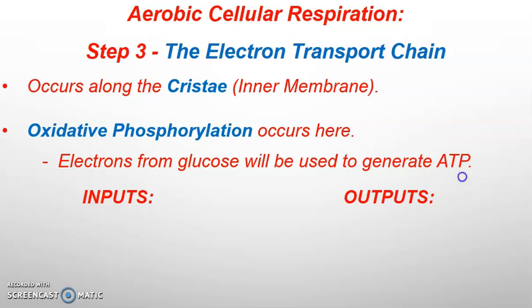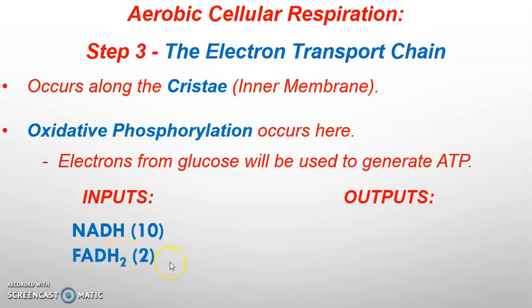In order to do this process, we're going to need some inputs. The first of three inputs would be all of the NADHs that have been made all along the way for aerobic cellular respiration — a total of 10 NADHs. Two came from glycolysis, two from two turns of the prep step, and six from two turns of the Krebs cycle. We'll also throw in two FADH2s, which came from two turns of the Krebs cycle.